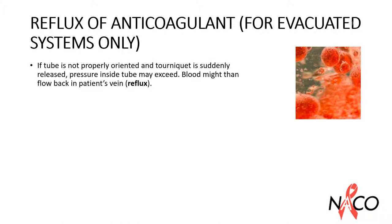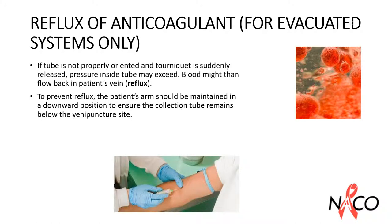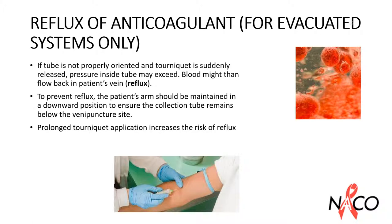If the tube is not properly oriented and the tourniquet is suddenly released, pressure inside the tube may momentarily exceed that in the vein. Blood might then flow back into the patient's vein from the collection tube, and tube additives like EDTA have the potential to cause adverse reactions in patients. To prevent reflux, the patient's arm should always be maintained in a downward position to ensure the collection tube always remains below the venipuncture site and fills from the bottom upwards. Prolonged tourniquet application increases the risk of reflux. Reflux is of great concern when non-sterile tubes are used, because of the potential of transferring harmful microorganisms to the patient's peripheral blood; bacterial contamination is much more of a concern than reflux of additives, as the latter will be greatly diluted in the blood.